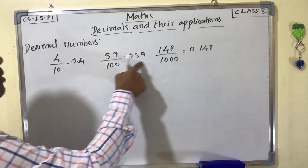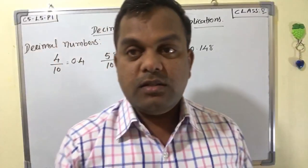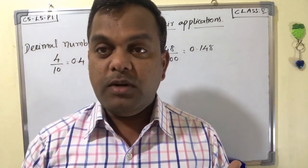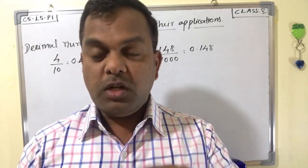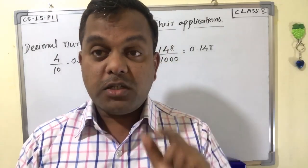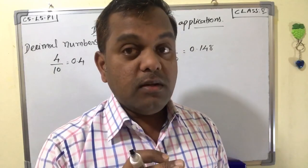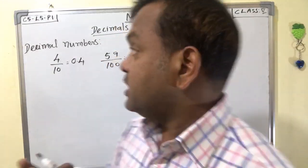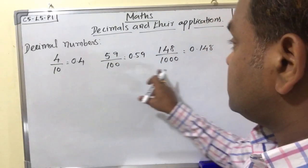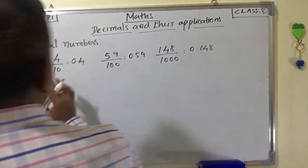So 0.4, 0.59 and 0.148 — these numbers are called decimal numbers. Usually we have three types of numbers: whole numbers like 1, 2, 3, 4, 5, 6, 10,000, 1 lakh and so on; fractional numbers, which have a numerator and a denominator; and decimal numbers, where the denominator should be 10, 100, 1000, 10,000 and so on.